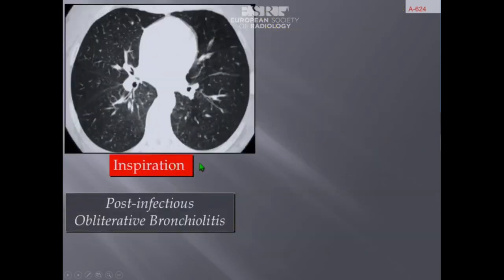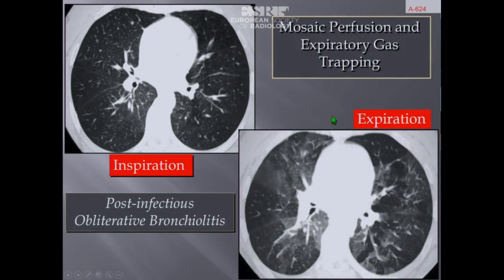Some patients have no bronchiectasis but have small airway disease, particularly obliterative bronchiolitis. In such cases, when there is doubt about heterogeneity in lung attenuation, you have to consider the possibility of mosaic attenuation due to mosaic perfusion. In this particular case, a complementary expiratory acquisition is needed, which produces accentuation of the contrast between normal and abnormal areas, as the areas with obstruction of small airways do not increase in attenuation as normally expected.